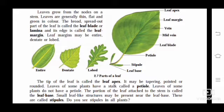Leaves of some plants have a stalk called the petiole. You can see the petiole in the figure. Some plants' leaves do not have a petiole. The portion of the leaf attached to the stem is called the leaf base. Small leaf-like structures may be present near the leaf base - these are called stipules. You can see in figure 2.7, two small leaves at the leaf base are the stipules.